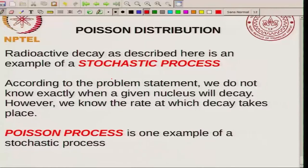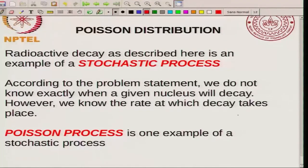The Poisson distribution we discussed with radioactive decay is an example of a stochastic process: the radioactive decay occurs at any random instant in time and we do not know exactly when a given nucleus will decay. However, we know the rate at which decay takes place. This Poisson process is one example of a stochastic process. In the next lecture I will talk about the Gaussian distribution, and I will complete this lecture here. Thank you very much.